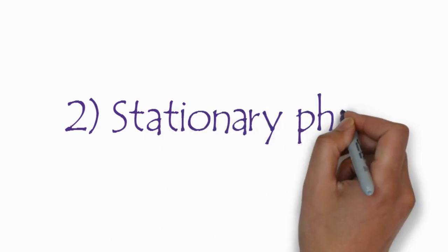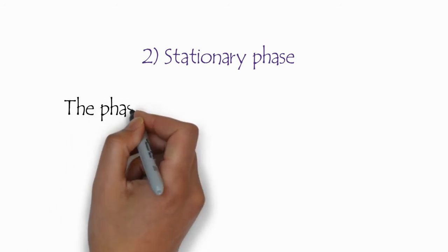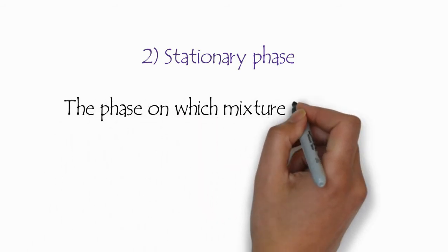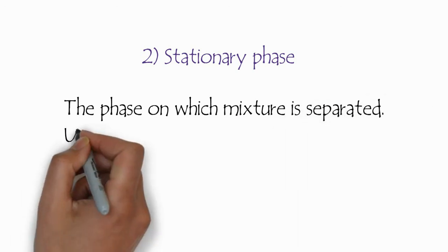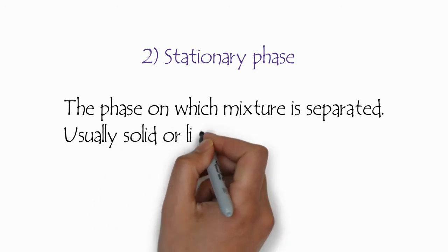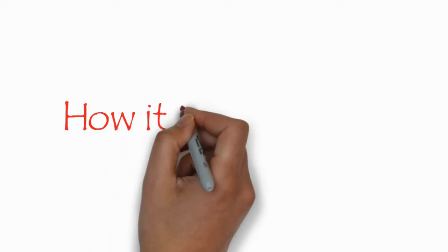The second component is the stationary phase. This is the phase on which the mixture is separated. It is called stationary phase. It is usually a solid or liquid, paper or column.